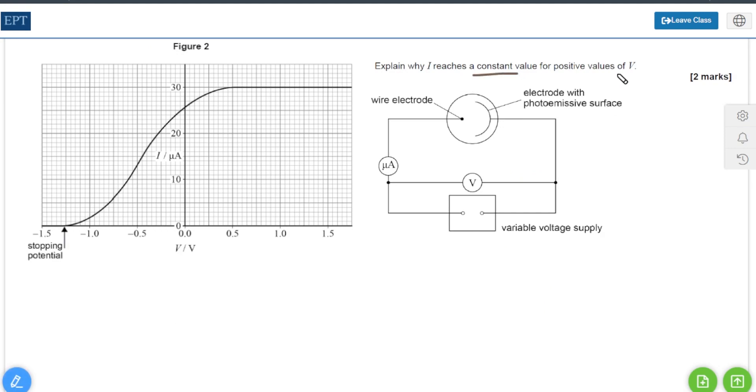Next we have been asked to explain why we get the flat plateau of a constant value for current at certain values of positive V. This comes down to the fact that electrons are leaving the surface in different directions with different kinetic energies.